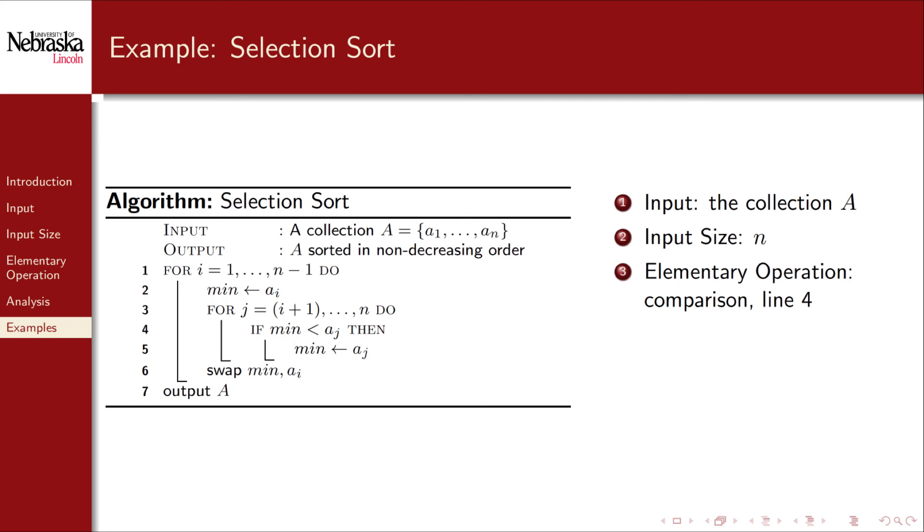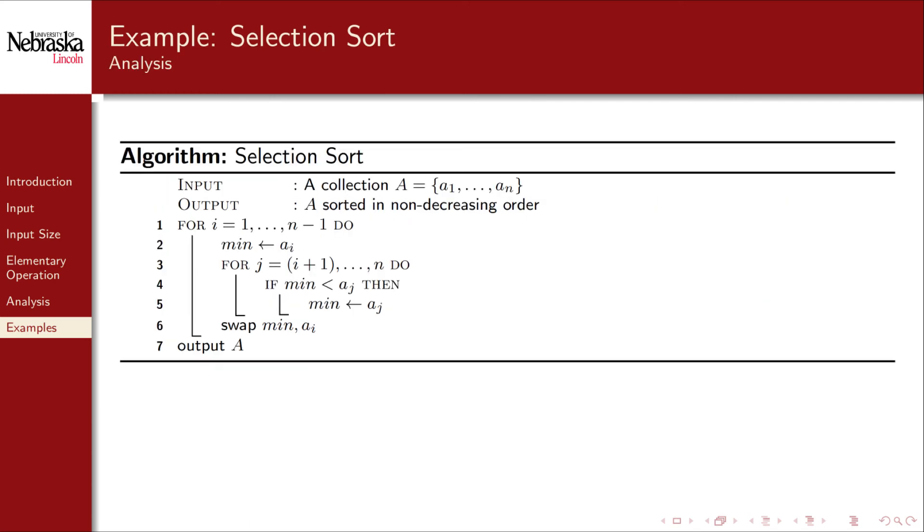They're both necessary to the control structures of the algorithm. In any case, the control structure operations would be implicitly counted in our final analysis. To determine how many comparisons are made here, we're going to need to derive and solve a basic summation. We'll look from line 4 outward. On line 4, we perform a single comparison. Observing the enclosing loop structure, line 4 is executed once for each iteration.